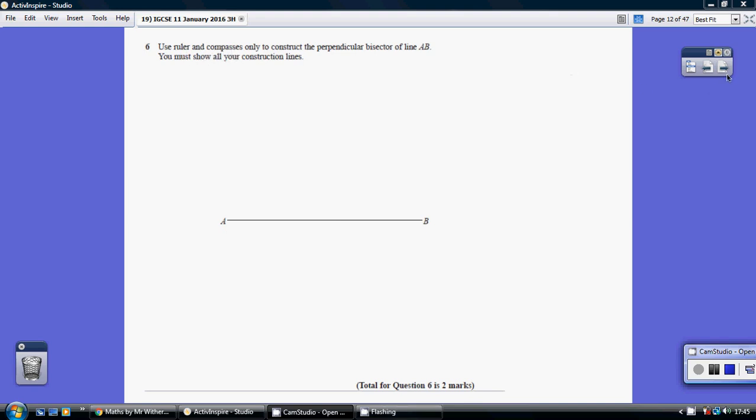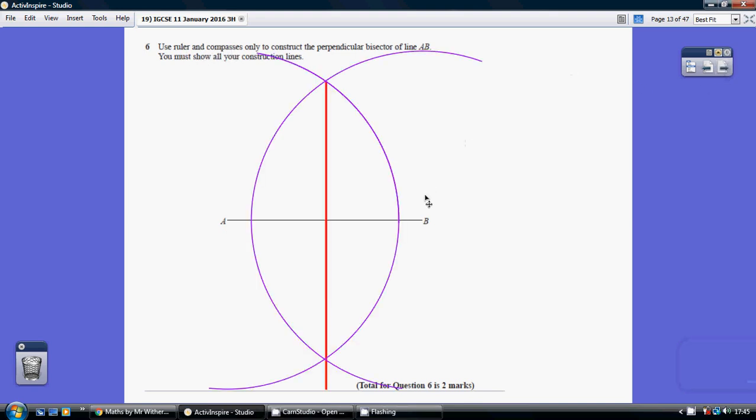So the process for doing that is to get your compass out and draw a couple of arcs. You put the pin of the compass here, you get the length of the compass to be more than half but less than whole, so say to about here, and with the pin at A you just do a great big arc.